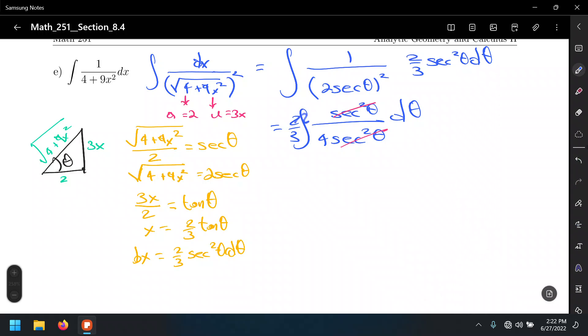So two-thirds times one-fourth, the two reduces with the four to leave us with a 2 in the denominator. So these two-thirds reduce to one-sixth, the integral of dθ. And what's the integral of dθ? Just theta. One-sixth theta.